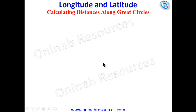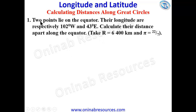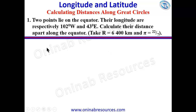Hello out there, welcome to this tutorial on longitude and latitude. In this video we'll be calculating distances along great circles. Problem 1: two points lie on the equator; their longitudes are respectively 102 degrees west and 43 degrees east. Calculate their distance apart along the equator. Take R to be 6400 kilometers and pi to be 22 over 7, where R is the radius of the earth.